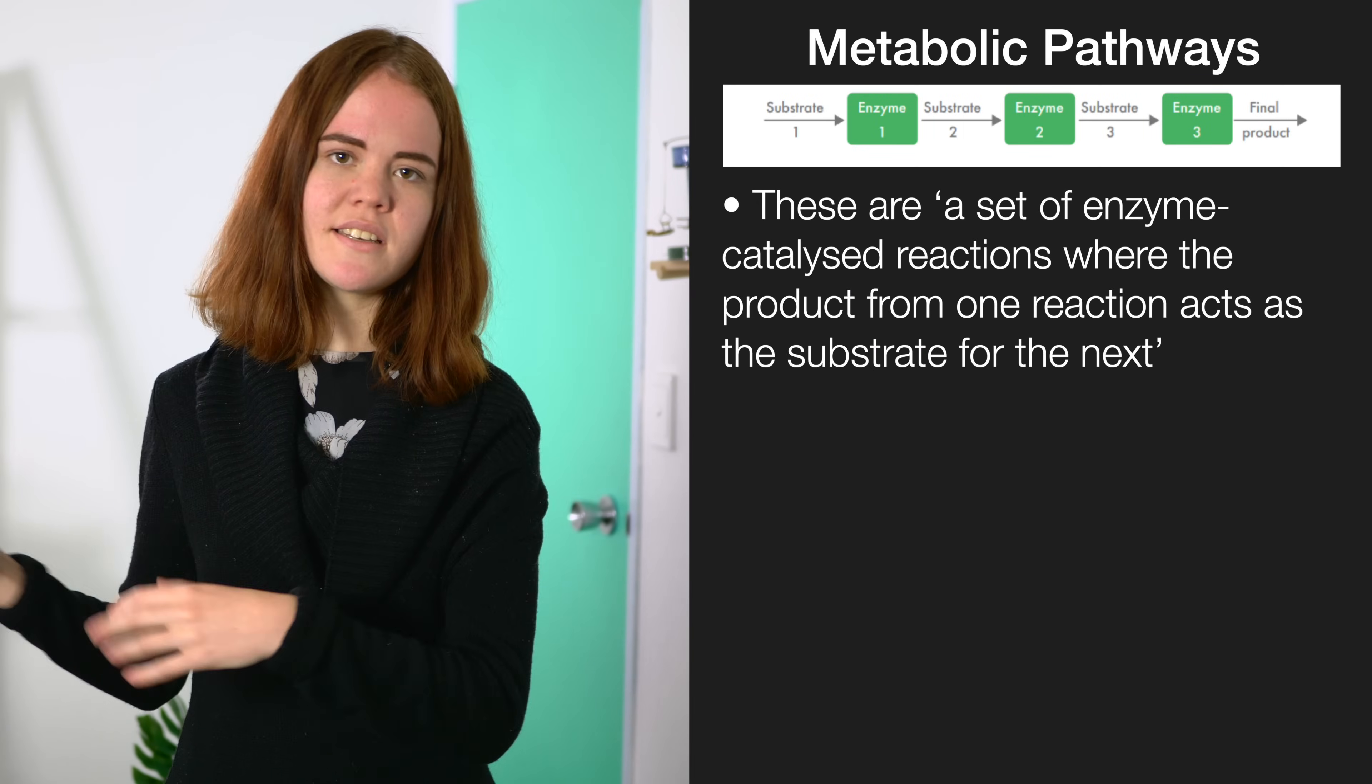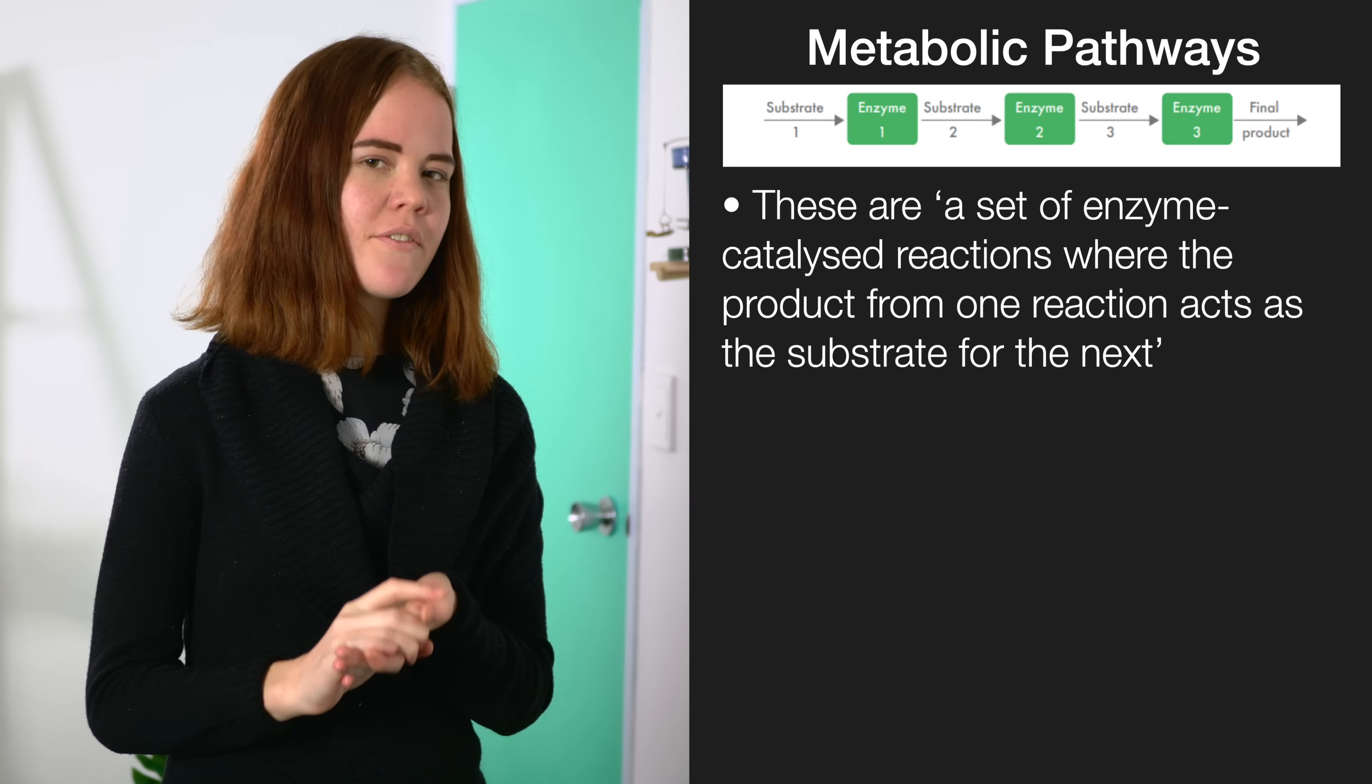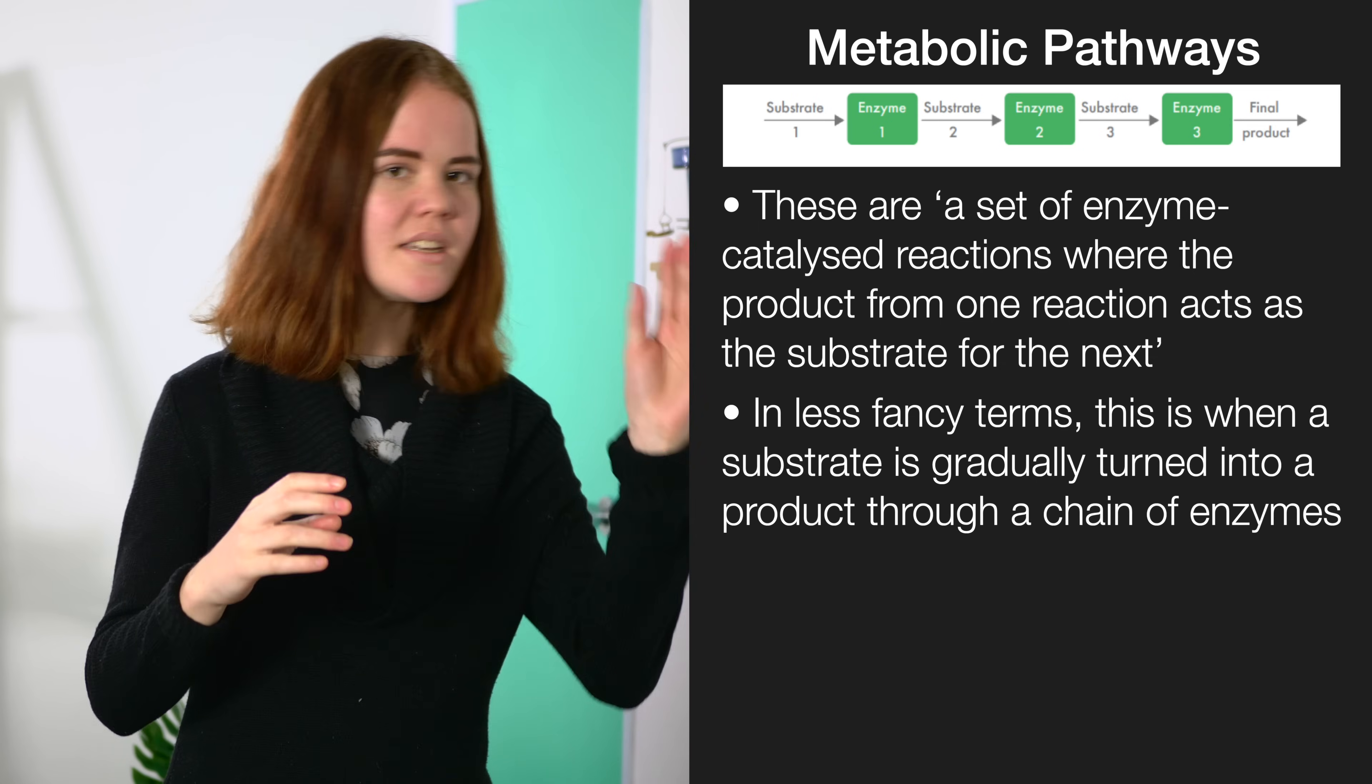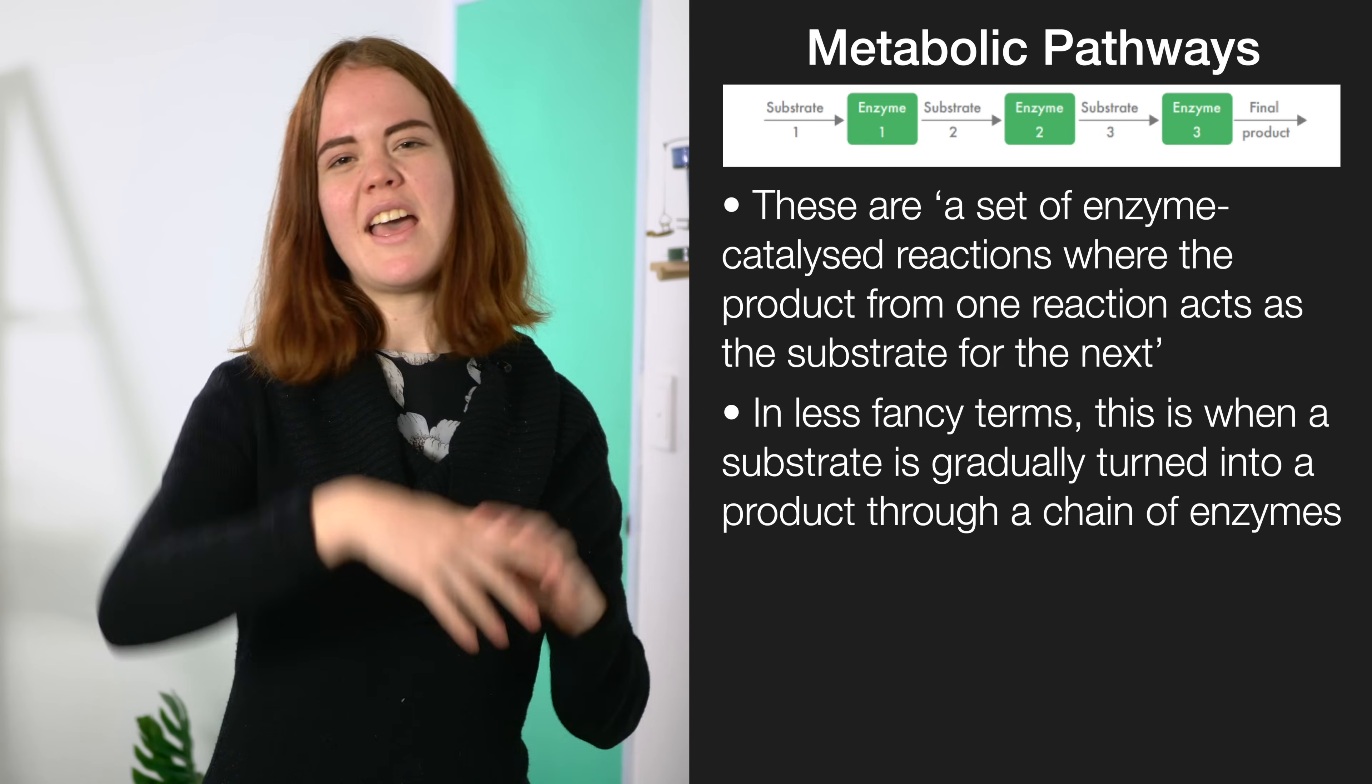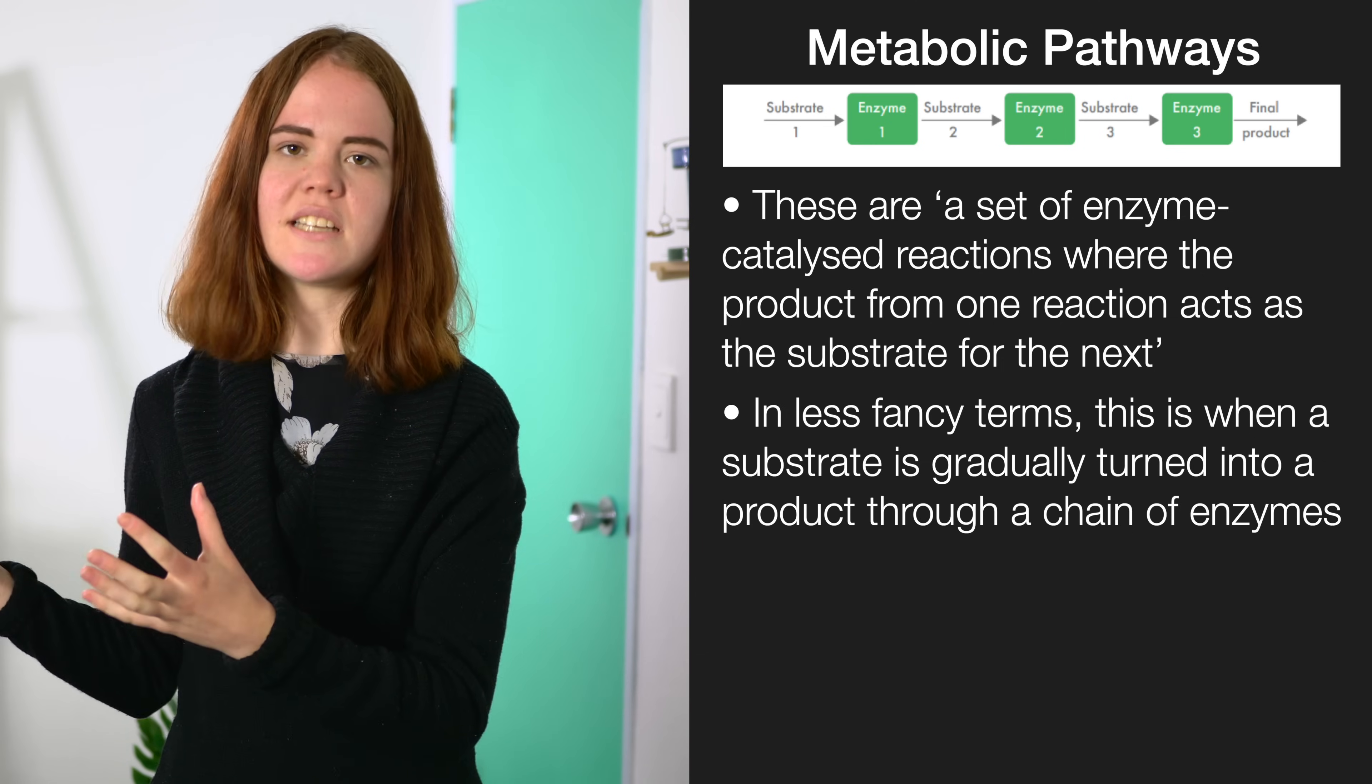A concept from this paper that students often find particularly hard to understand is metabolic pathways. Now the real definition of these is that it's a path of enzyme-catalyzed reactions where the product from one reaction acts as a substrate for the next. This is just a fancy way of saying that you have this one initial substrate, and bit by bit by several enzymes it gets turned into the final product so you can actually express a particular gene.